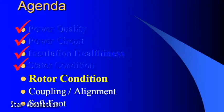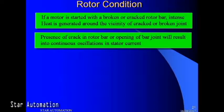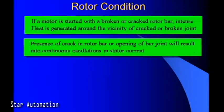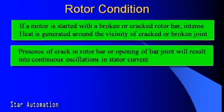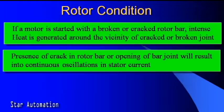Now we will discuss rotor conditions resulting in motor problems. If a motor is started with a broken or cracked rotor bar, intense heat is generated around the vicinity of the cracked or broken joint. The presence of a crack in the rotor bar or opening of a bar joint will result in continuous oscillations in the stator current.